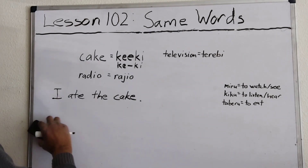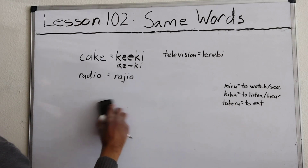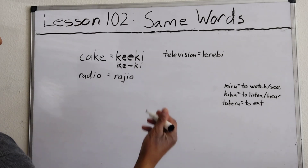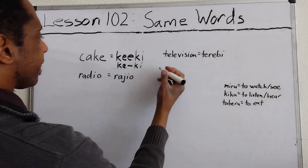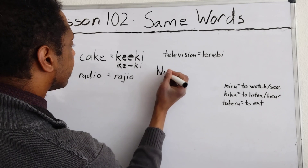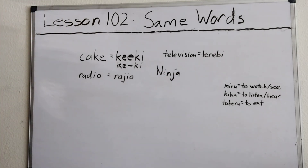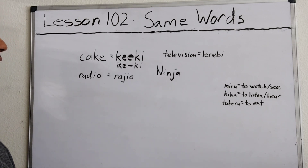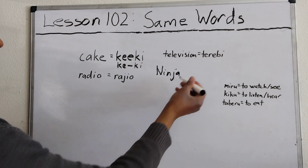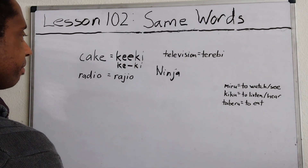By the way, just to show how this works in reverse — Japan once had a word called 'ninja,' and they taught it to English speakers who, instead of trying to translate it into English, simply used the word 'ninja.' It is what it is — it's a group of people.